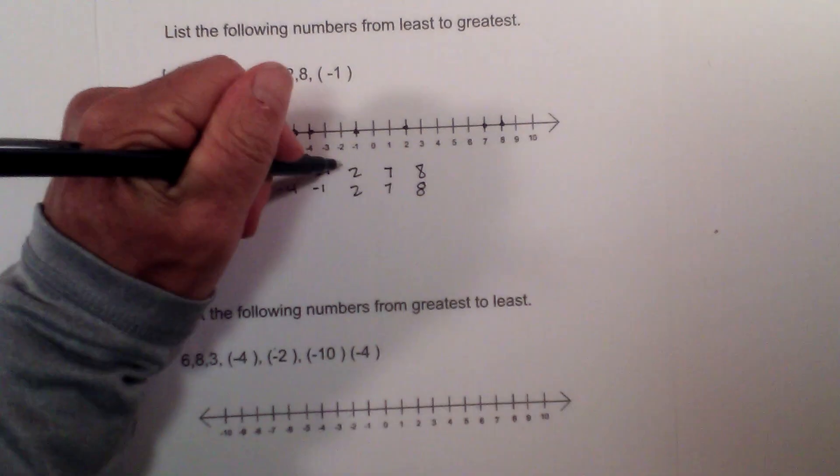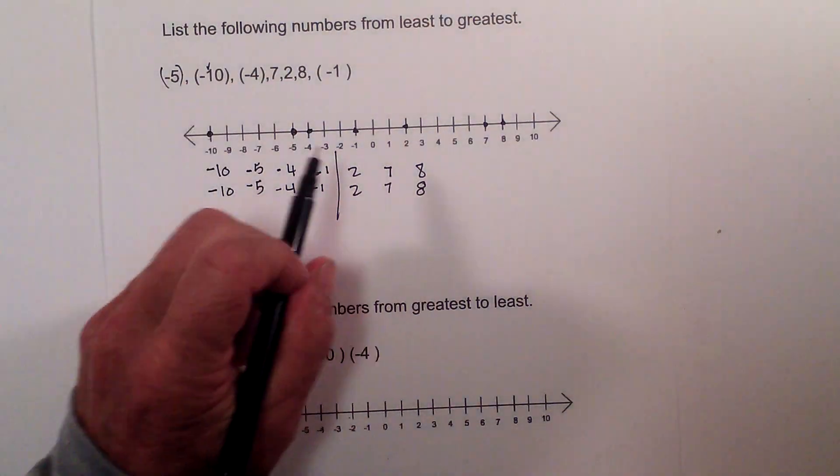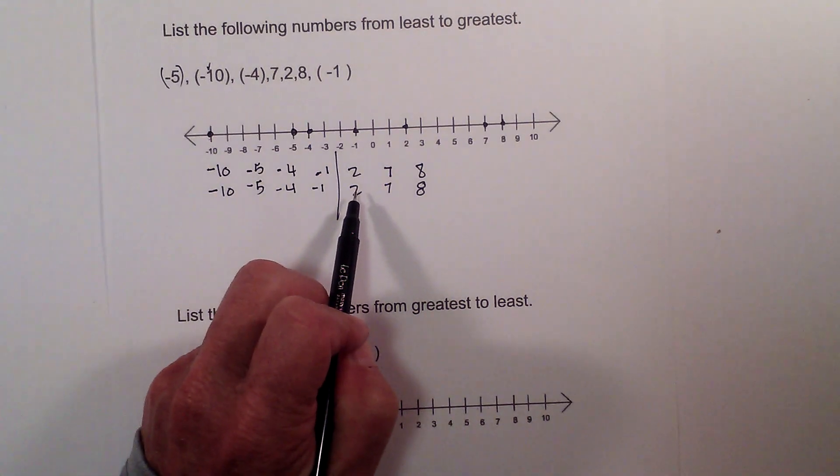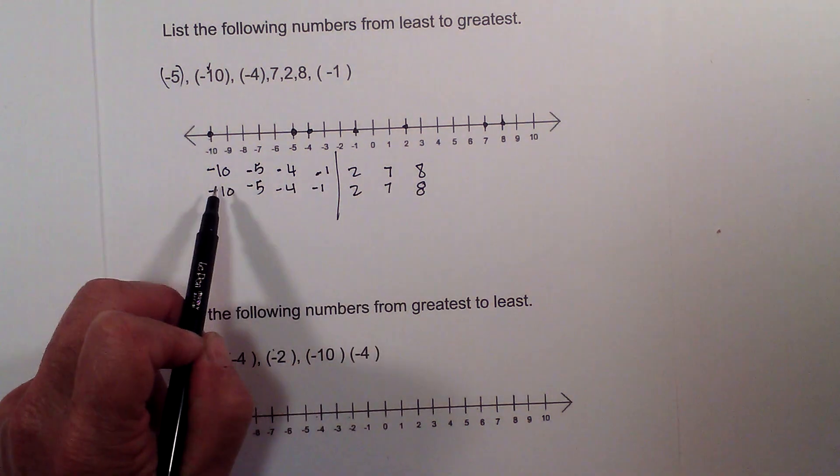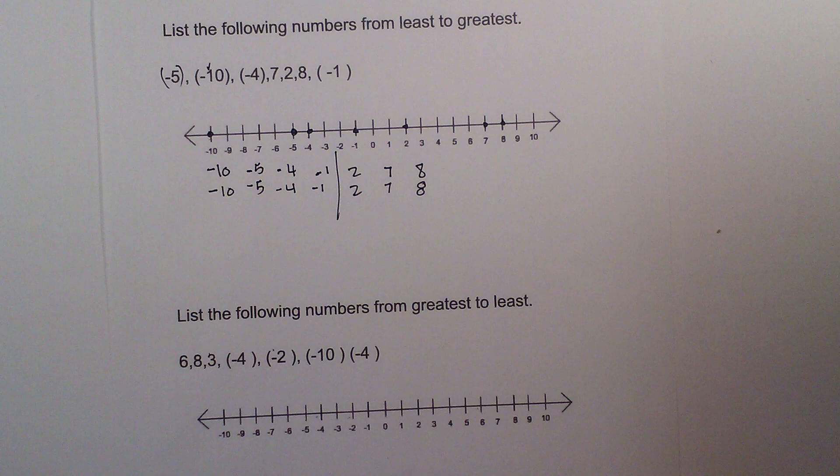Again, I will draw a line. These are negative, these are positive. Notice that with positive numbers, the larger the number, the larger it is. And with negative numbers, the larger the number, the smallest it is.